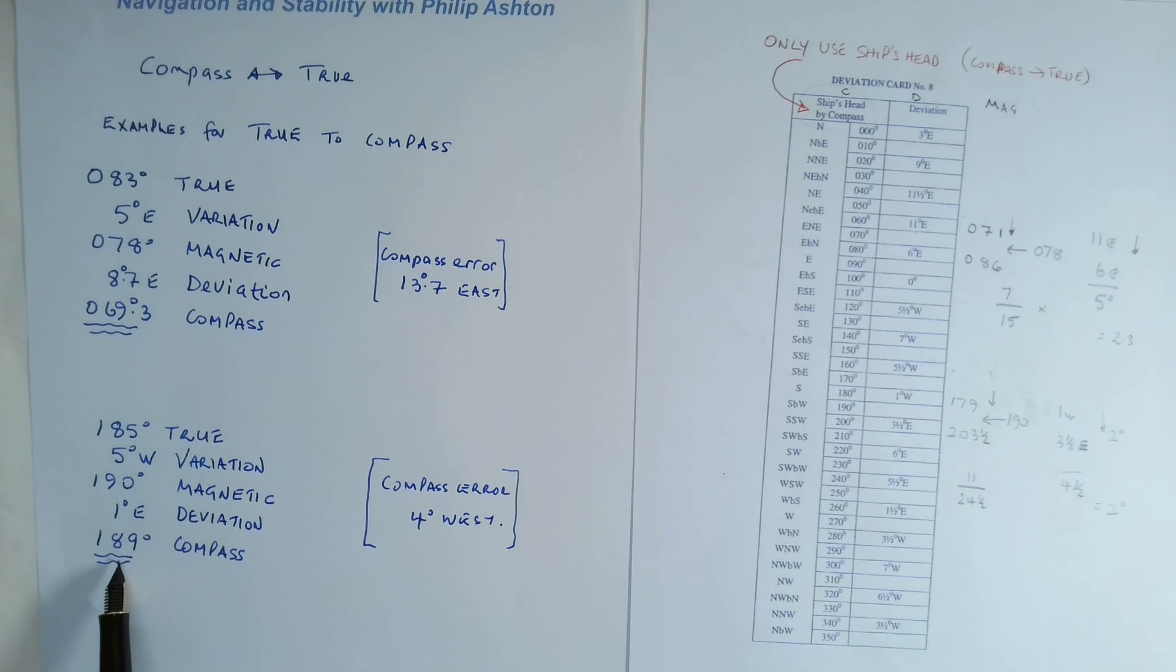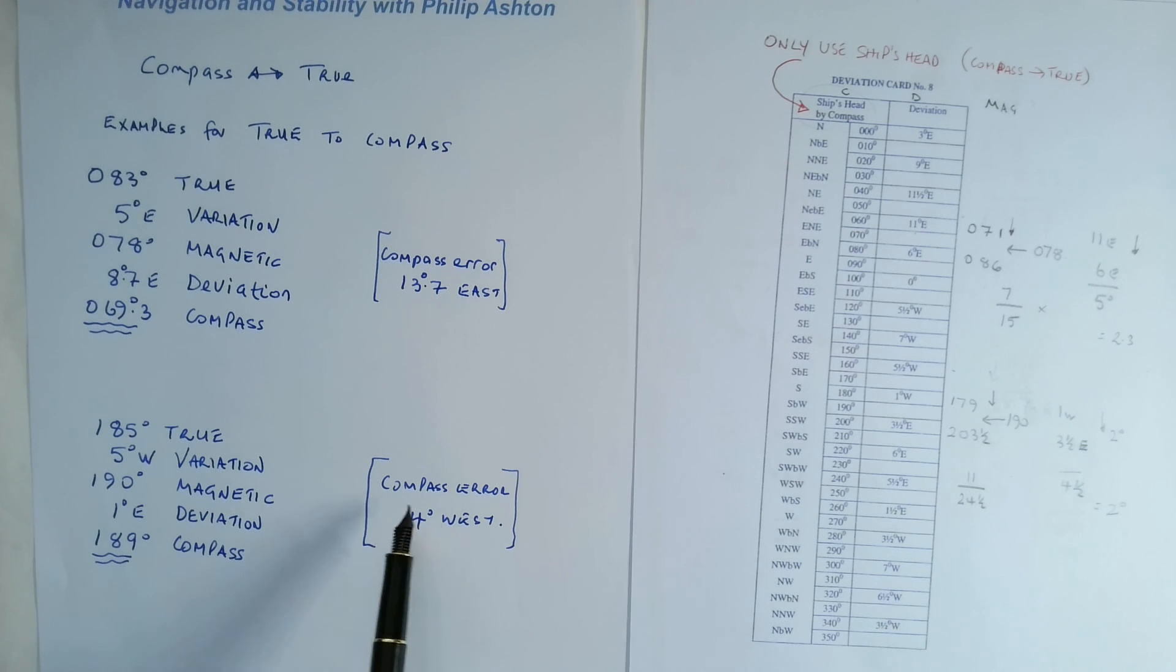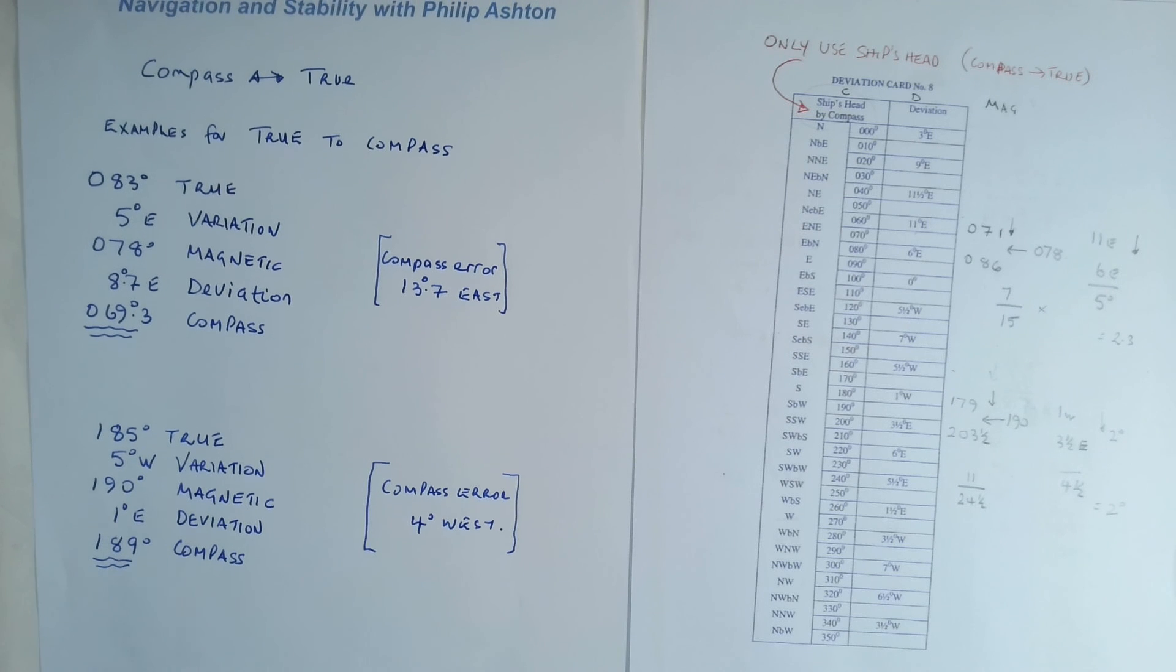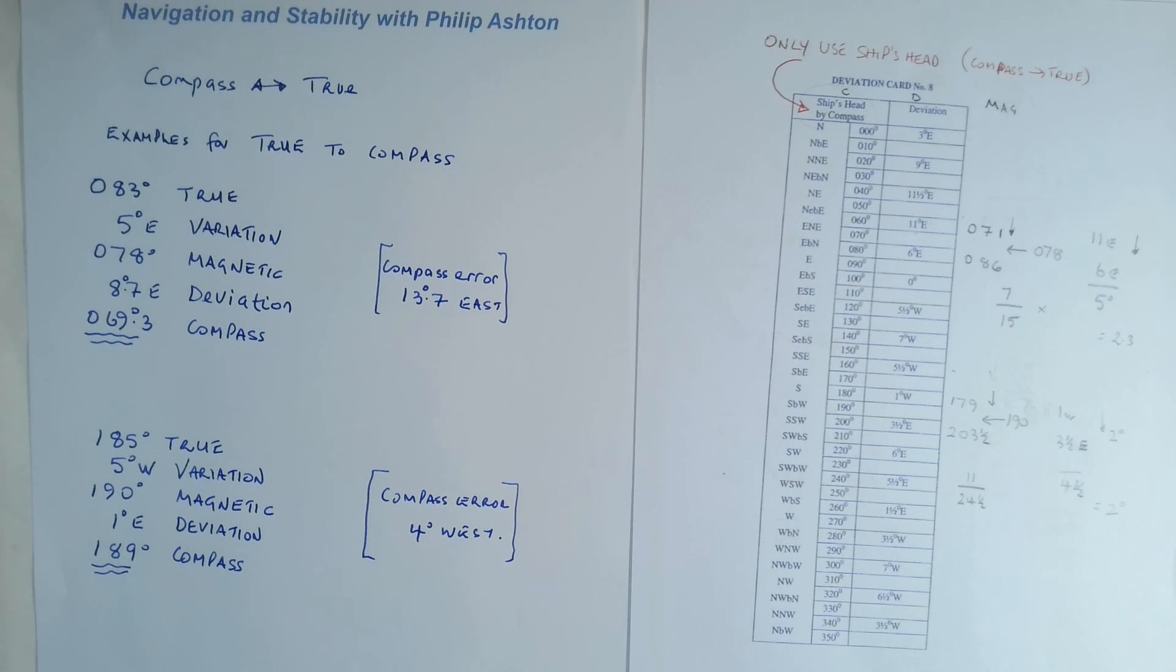And then we apply that to get our compass 189. And if we put the two together, 5 west and 1 east, we have a compass error of 4 degrees west. So that's just a quick look at how we convert from true to compass.